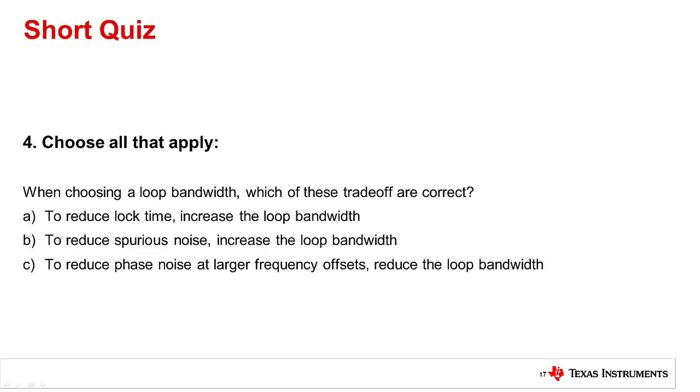Question 4. When choosing the loop bandwidth, which of these trade-offs are correct? To reduce lock time, increase the loop bandwidth. That's choice A. Choice B, to reduce the spurious noise, increase the loop bandwidth. Choice C, to reduce the phase noise at larger frequency offsets, reduce the loop bandwidth.